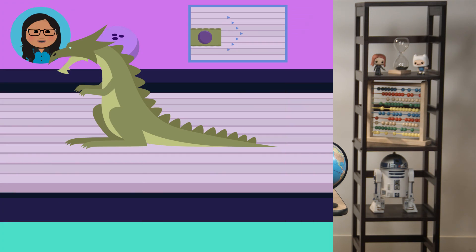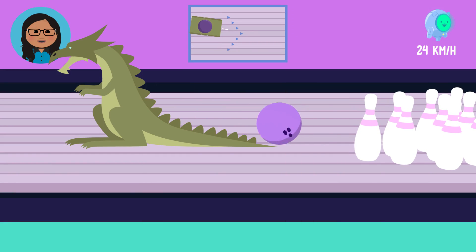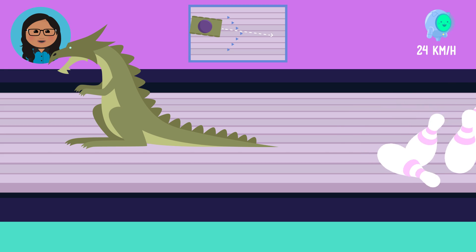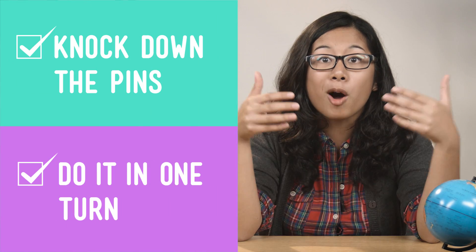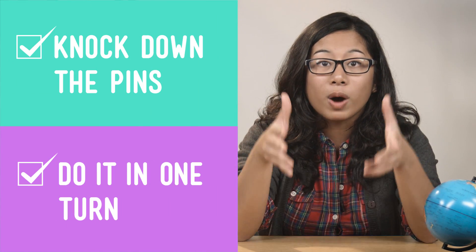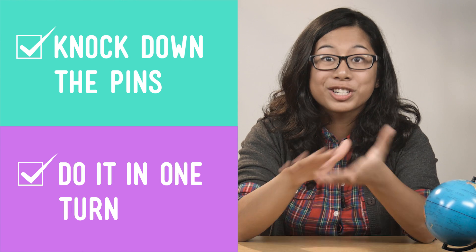Let's go with one more trial. This time we'll split the difference by setting the angle of the ramp so that the ball will hit the pins just slightly to the right of the center pin. That did it — we met both criteria. We hit the pins and knocked them all down with one ball. A strike!